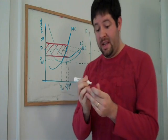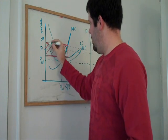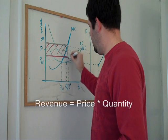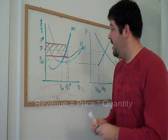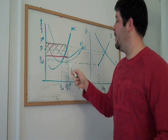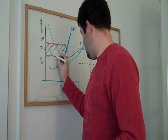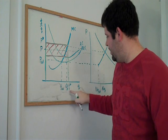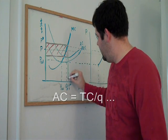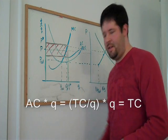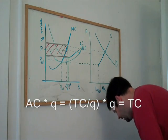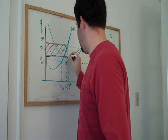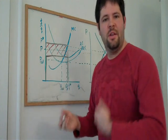Why do I say the firm gets that box? This area here is the revenue that the firm brings in under the equilibrium price. This area here is the average cost of producing Q star units times Q star units. Well, that's just the cost.